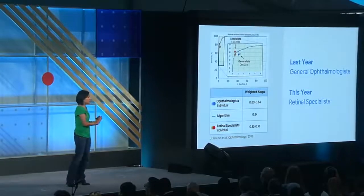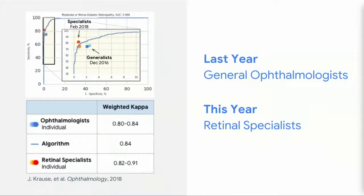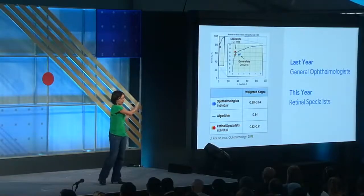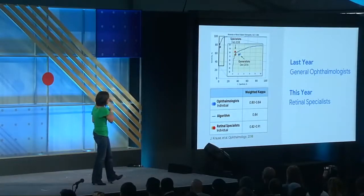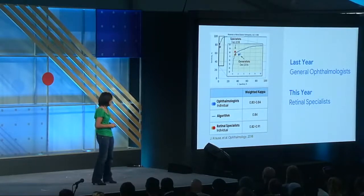Since then, we've improved the model. Last year around December 2016, we were on par with generalists. This year, in a new paper we published, we used retina specialists to grade the images. We also had them argue when they disagreed about what the diagnosis was. When we trained the model using that as a ground truth, the model predicted that quite well too. So this year, we're on par with the retina specialists. The weighted kappa — agreement on the five-class level — shows that we're essentially in between the ophthalmologists and retina specialists.